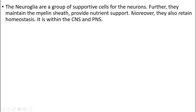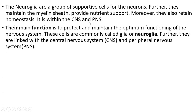Neuroglia are a group of supportive cells for the neurons. They maintain the myelin sheath which provides nutrient support. Moreover, they help in homeostasis. They are found within the CNS (central nervous system) and peripheral nervous system. The main function of neuroglia is to protect and maintain the optimum functioning of the nervous system.